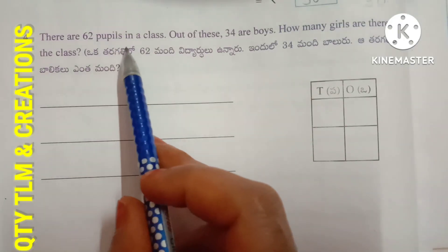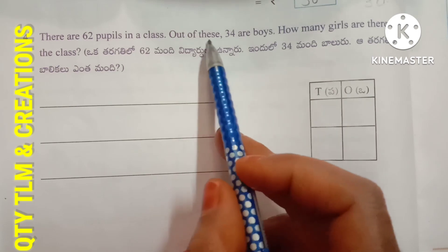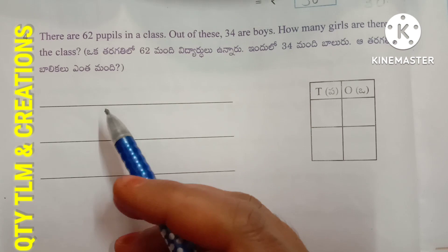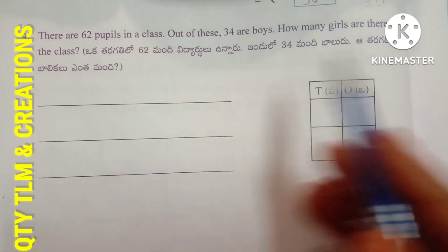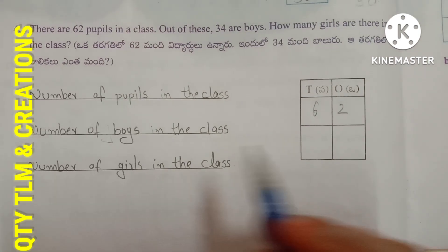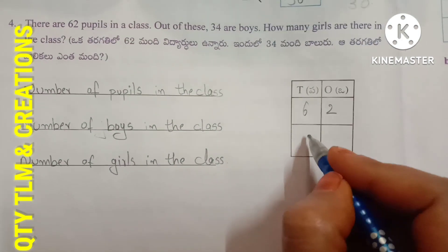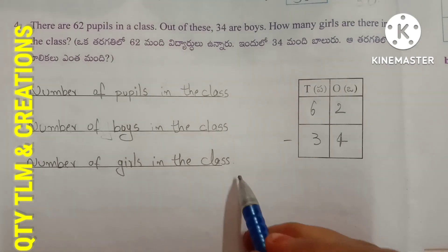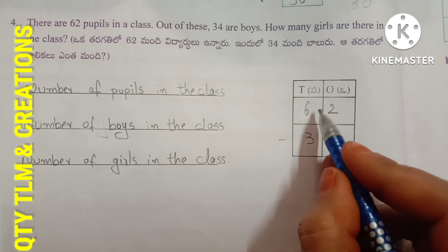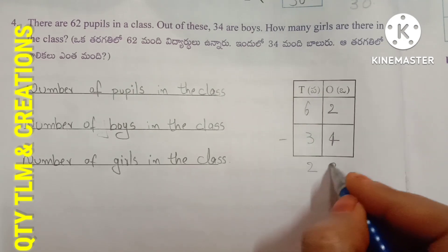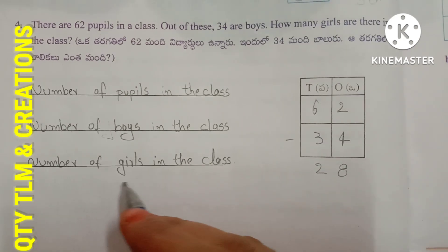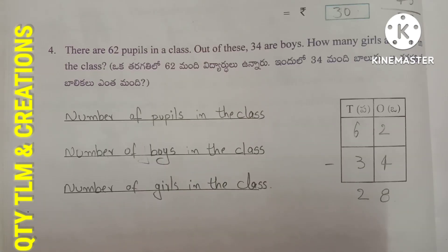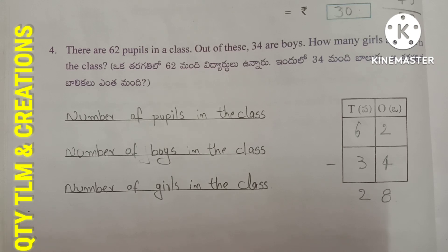Fourth question: There are 62 people in a class. Out of them 34 are boys. How many girls are there? Number of people in the class equals 62. Number of boys equals 34. Number of girls: subtract 34 from 62 to get 28. So the number of girls in the class equals 28. Remaining worksheets will continue in another video. Until then, take care. Thank you, bye bye.